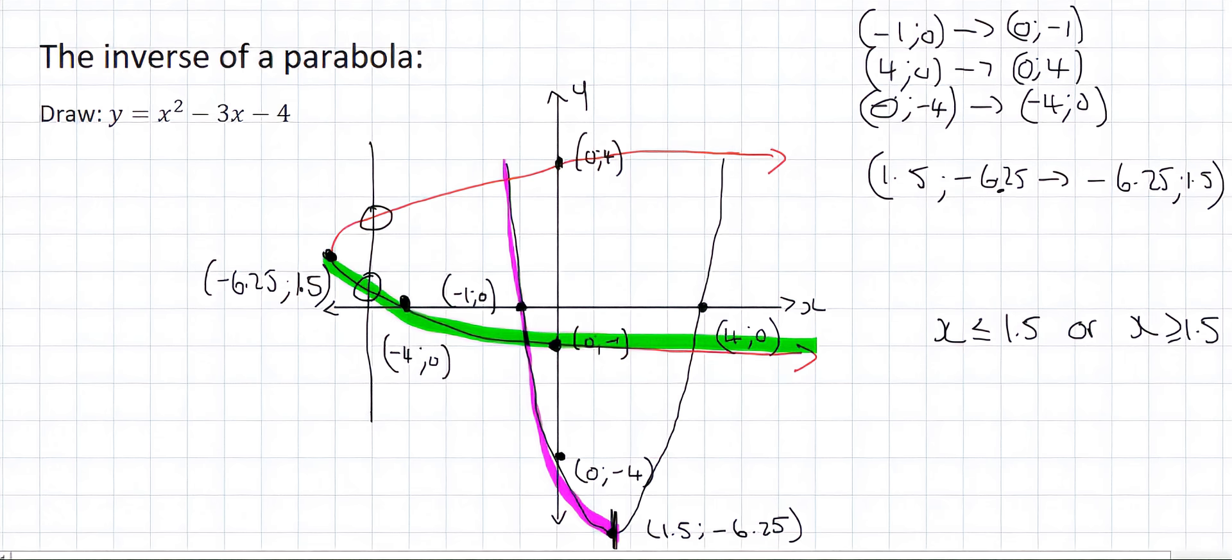And so each of those green halves that I've just showed you, those would be functions. Why? Because if you had to draw a vertical line at any given point, it would only cut that graph once. But if we had both halves, then it's always going to cut it twice. And that is not a function.